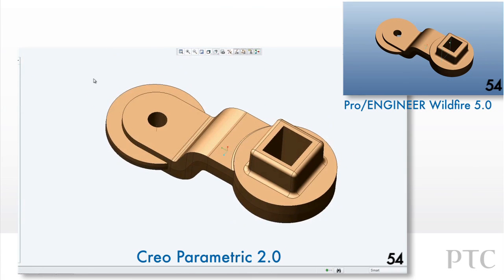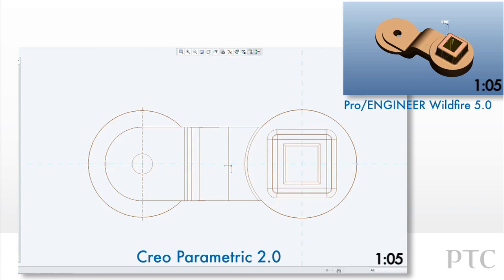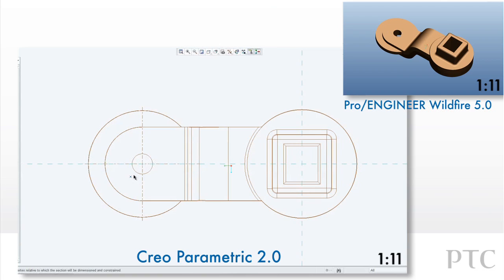As we create another feature, a significant enhancement to save time and streamline sketching is the Construction Mode option. As we sketch and need to add additional references, you can do that easily by selecting the Alt key to temporarily pause creation while you add a reference — no need to cancel and then open a new window and start a new operation.